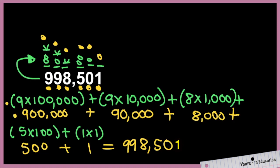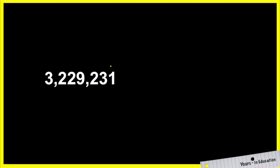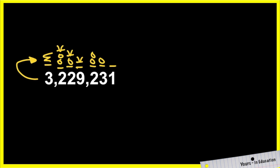Moving on — expanded notation, expanded form. Now we're moving on to the millions. We have ones, tens, hundreds, one-thousandths place, ten-thousandths place, one-hundred-thousandths place, and now one million, which has six zeros. We're going to multiply the groups by the place value of each digit: 3 times one million, 2 times one hundred thousand, 2 times ten thousand, 9 times one thousand, 2 times one hundred, 3 times ten, and 1 times one.